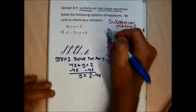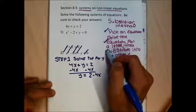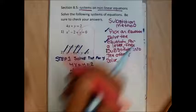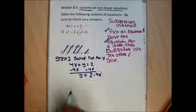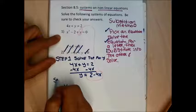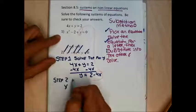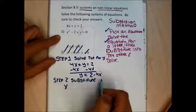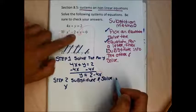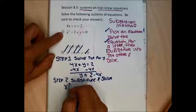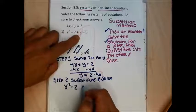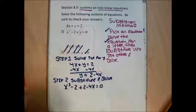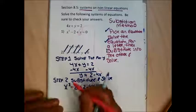Now I'm going to substitute and solve. I'm done picking and solving for a letter — now I go to the bottom equation and change that y to (2 − 4x). I leave the x cubed and the minus 2 alone, and substitute in 2 − 4x. So I get x³ + 2 − 4x = 0. The 2s cancel, leaving x³ − 4x = 0.